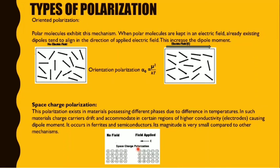So these are the basic types of polarization — EIOS: E for electronic polarization, I for ionic polarization, O for orientation polarization, and S for space charge polarization.